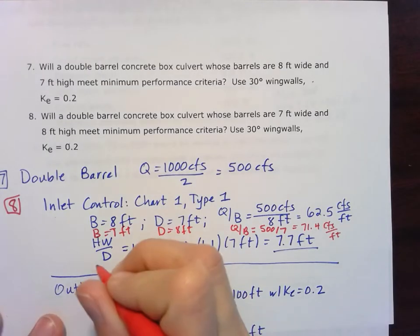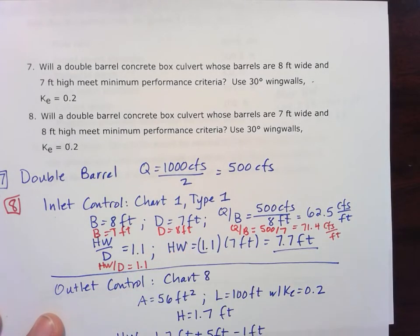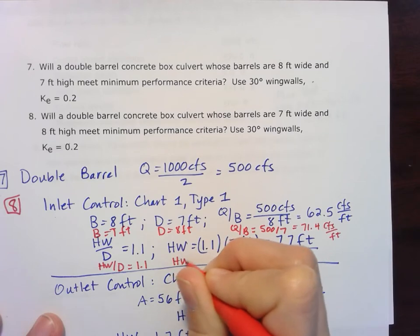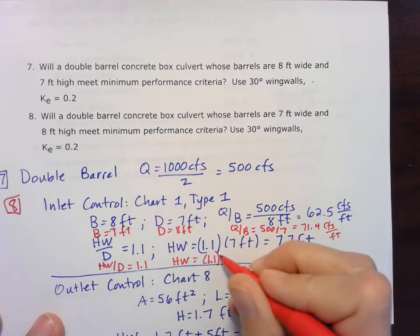But remember now, my D is different. So my HW over D, I'm still going to call that about 1.1. But for my HW, I have to take that 1.1 and now multiply it by my D of 8.